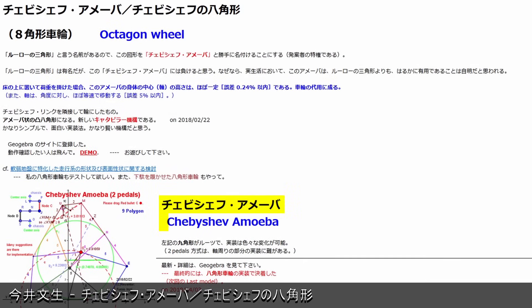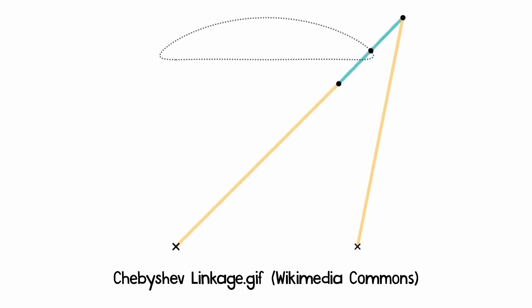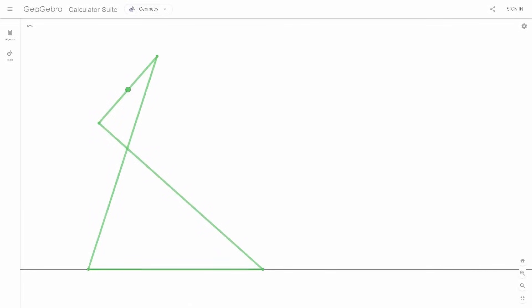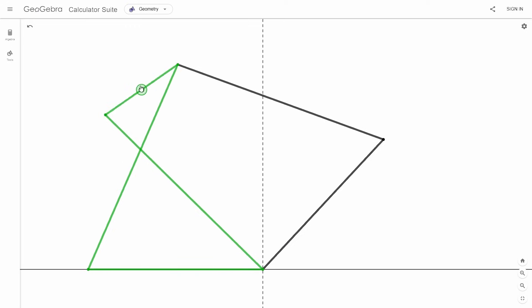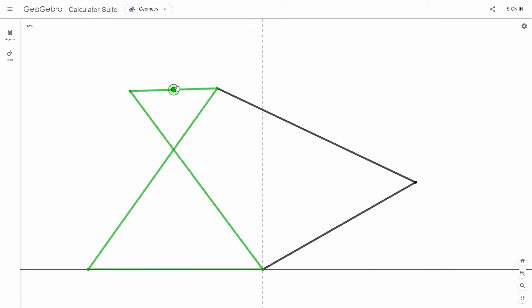Continuing on, I began contemplating about the etymology. Previously, it was referred to as the Chebyshev amoeba, and all the amoeba wheels we've explored thus far have stemmed from the Chebyshev straight-line linkage. So, naturally, I found myself wondering, could there be other straight-line linkages with similar properties? The key element that enables the amoeba wheel to function effectively is the ability to stack these linkages on top of each other, with the link responsible for the straight-line motion being capable of completing a full rotation. This is what the Chebyshev linkage is capable of.